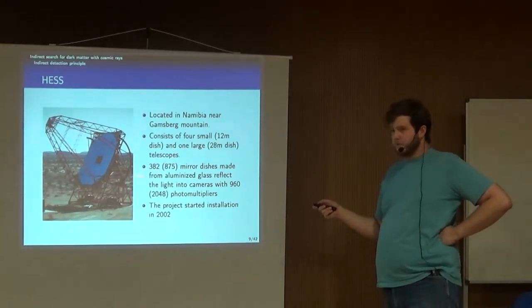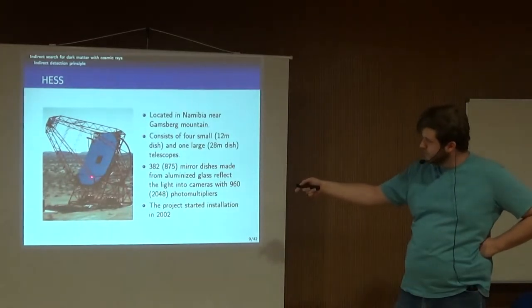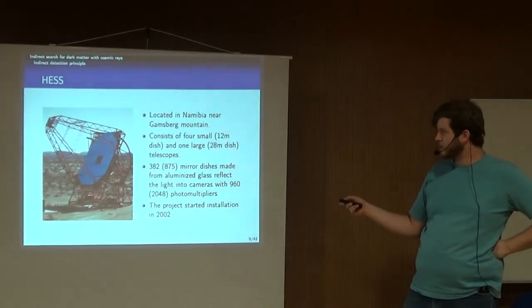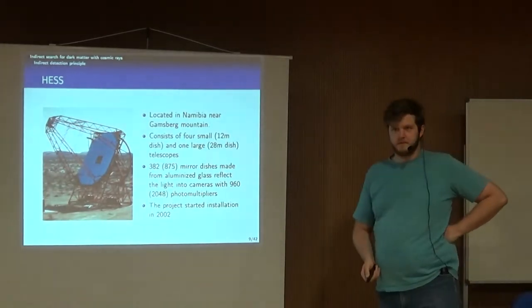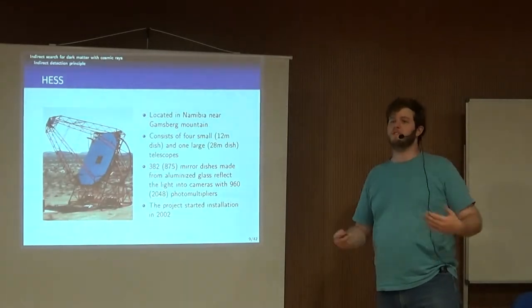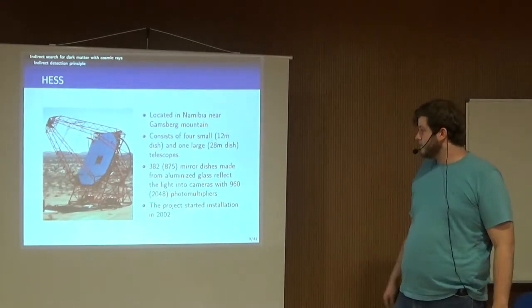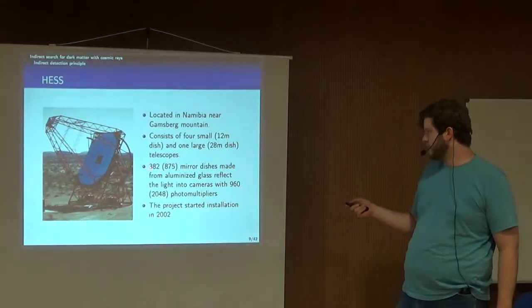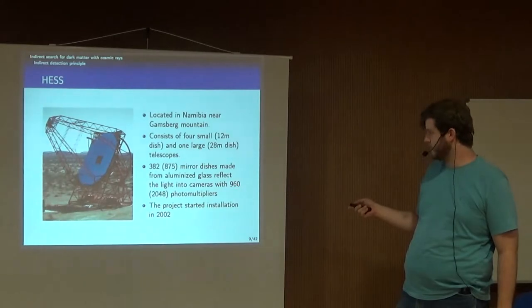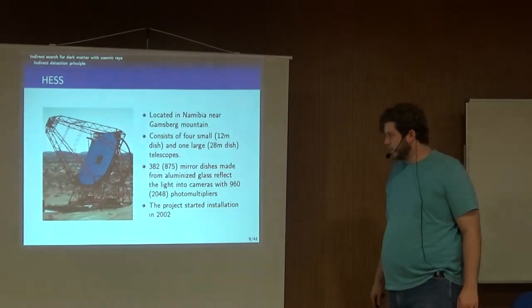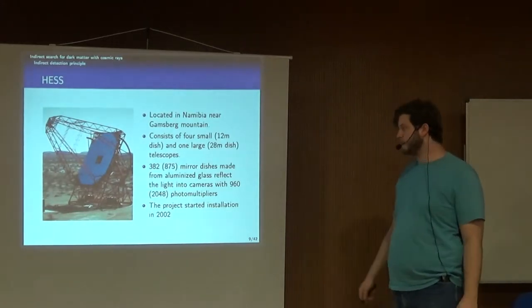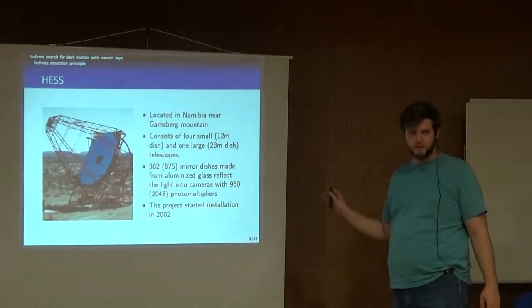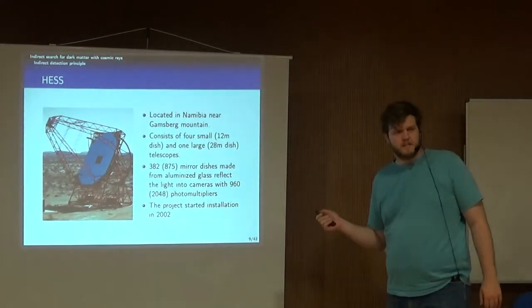The cameras use photomultipliers — around 960 PMTs for the small telescopes and 2,048 PMTs for the large telescope. They started installing the small telescopes and completed the whole setup over the following years; the big telescope was set up in 2012 and they have been taking data since then. MAGIC is a similar project — there are several projects like this that use somewhat different methods to detect this radiation.